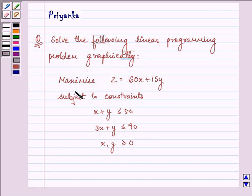Here we need to maximize z = 60x + 15y subject to the constraints: x + y ≤ 50, 3x + y ≤ 90, and x, y ≥ 0.